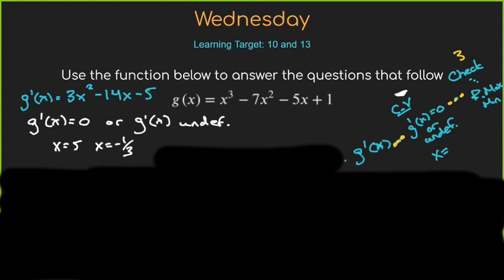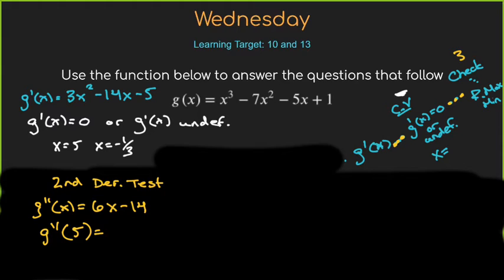All right. So what I'm seeing is a lot of us said first derivative test. So we're not going to do that. We'll do that for one and not the other. Abby, why did you say second derivative test? Well, in that case, well, your second derivative, once you find it, like the function for it, you get G double prime of X equals six X minus 14. And then I just plugged in the critical values I got. So I plugged in five and then I plugged in negative one third. And when I plugged in five, that was positive. So I know that was going to be concave up, which there's a minimum there.